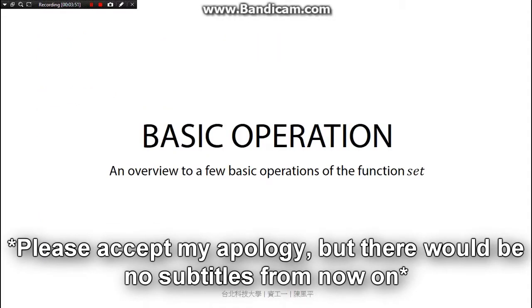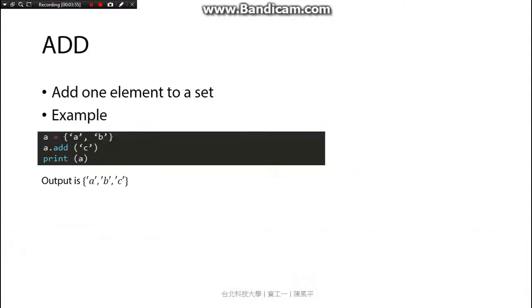We'll figure how to use basic operations of the function set. The first operation of the function set is add. This operation adds one element to a set. For example, a equals a, b - that means a contains character a and character b. And when we call the method add, the set a will now contain a, b, c.